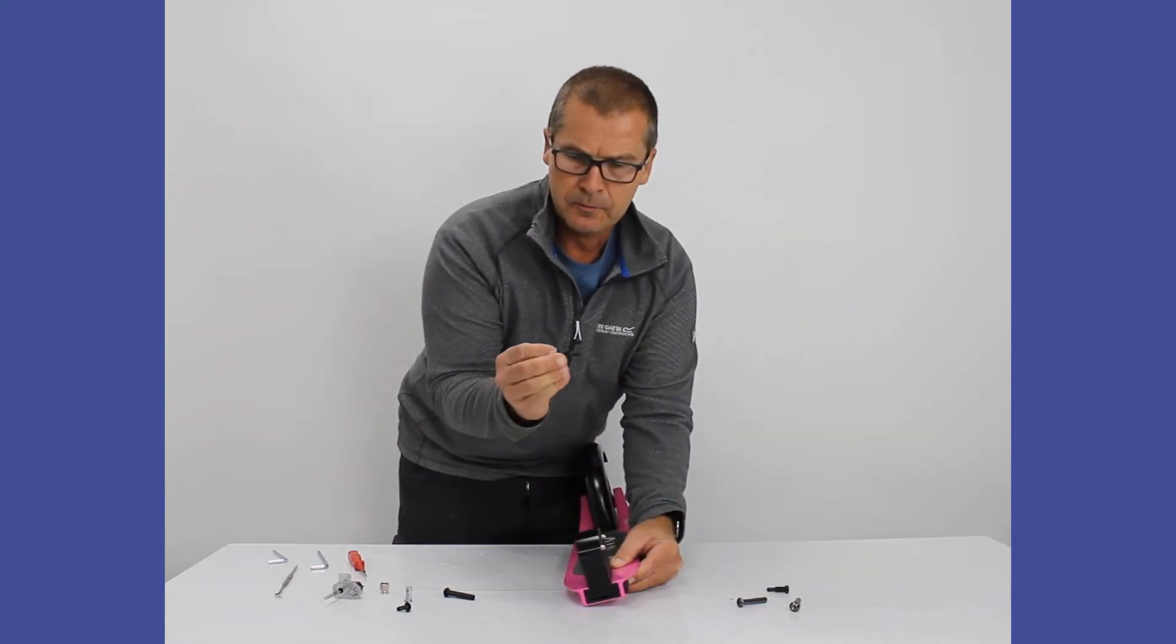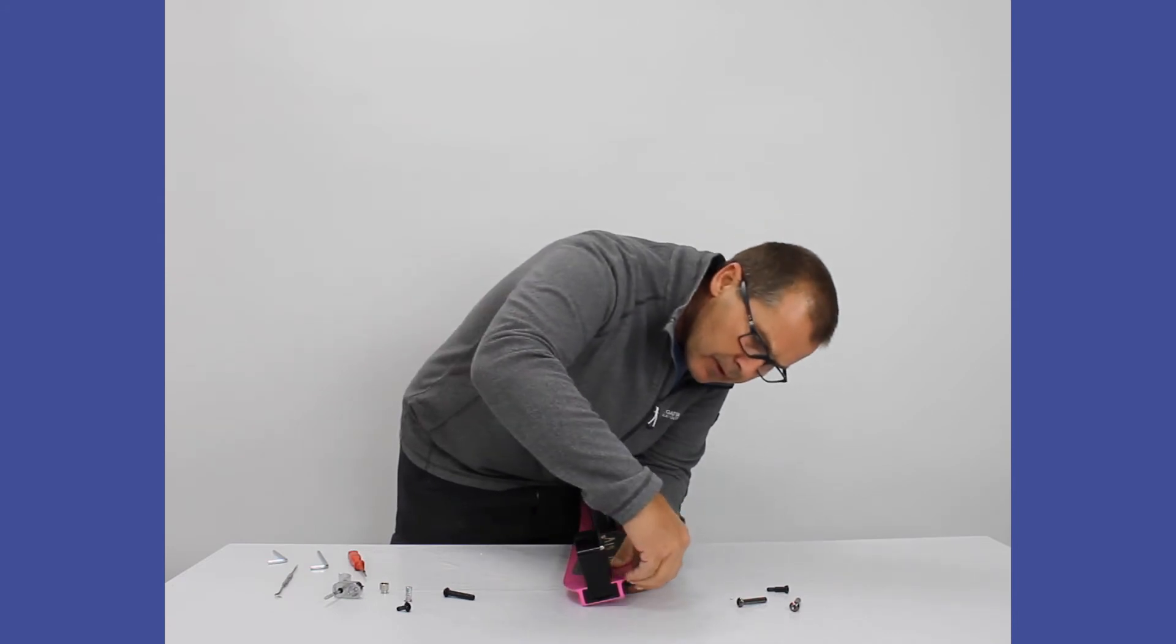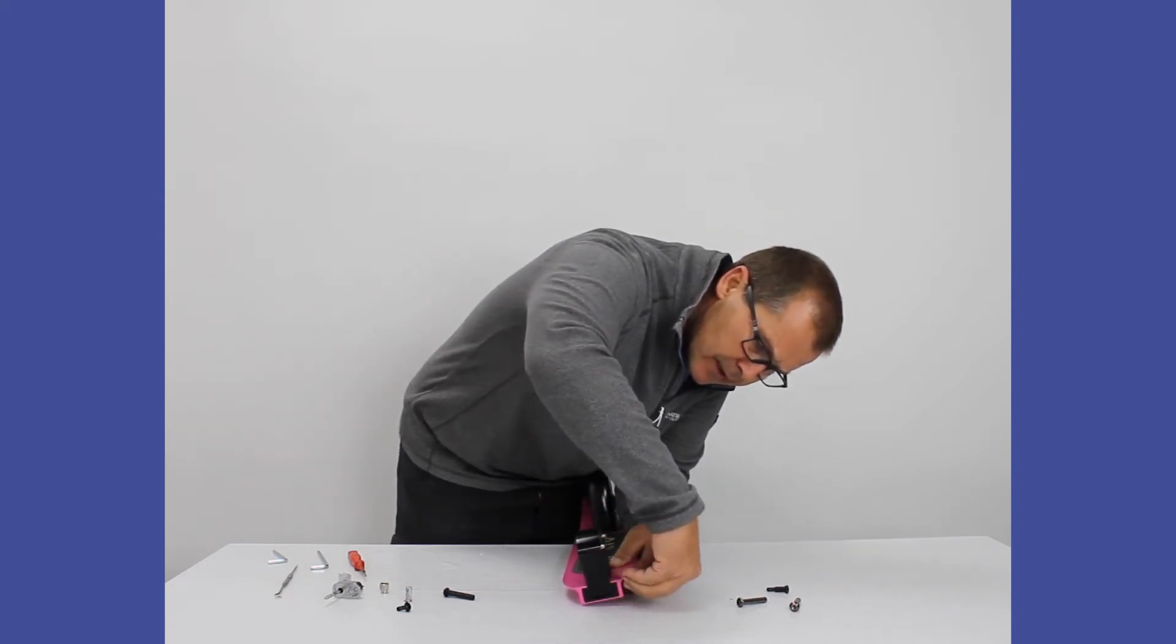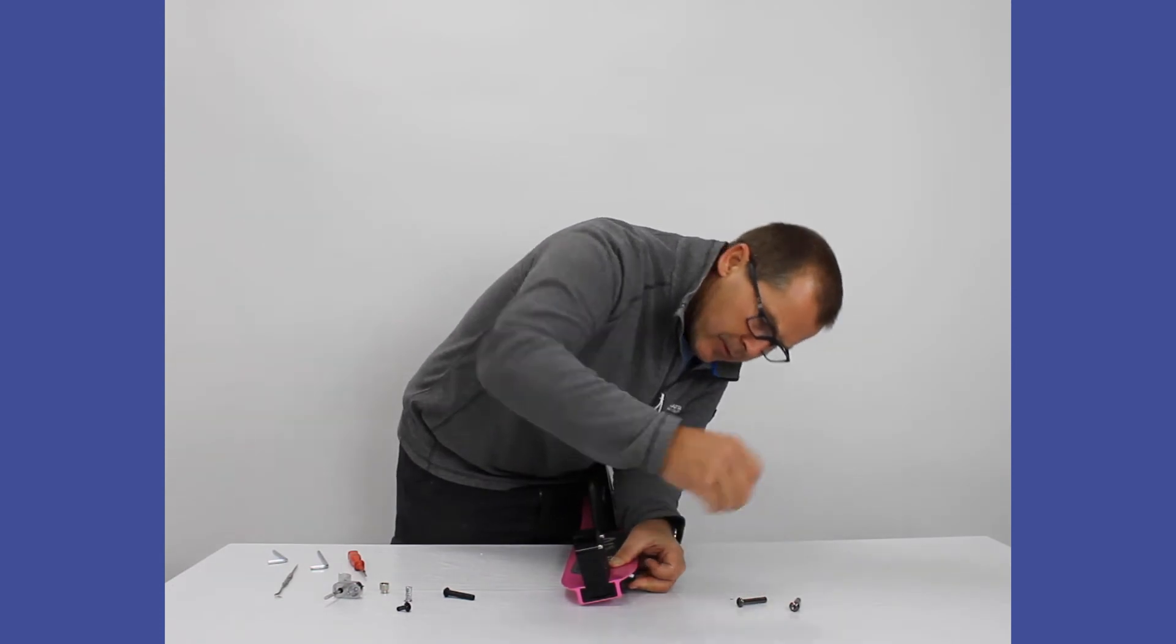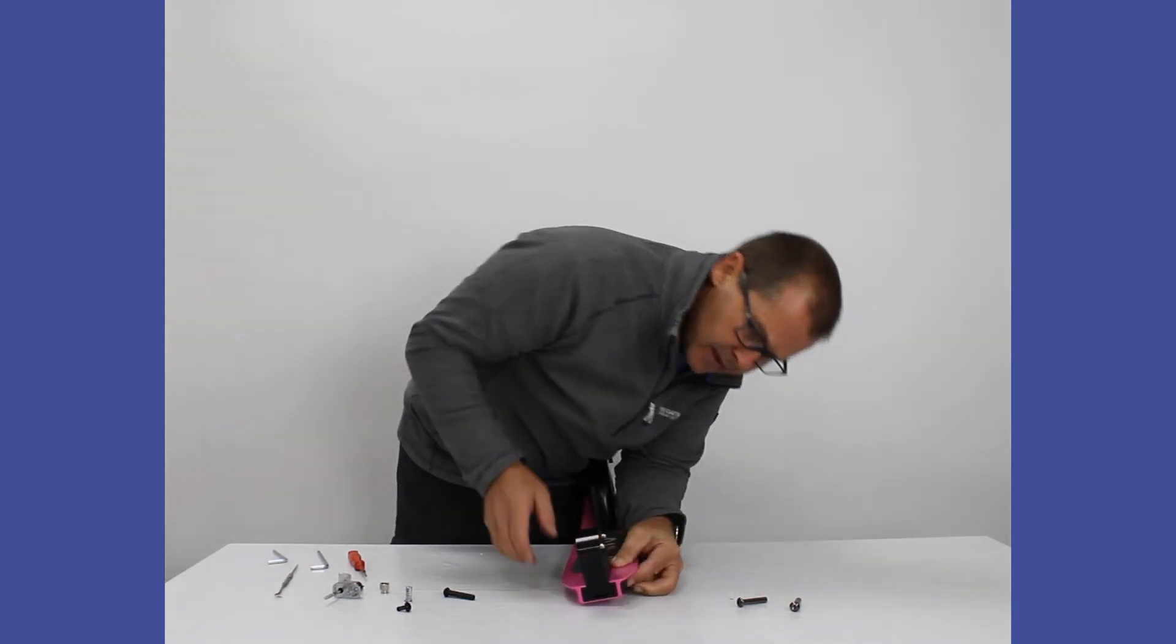And then the short bolts, the little black ones, go in on the left-hand side with the kickstand. And they go through. We'll put them both in so we can hold the kickstand in place.